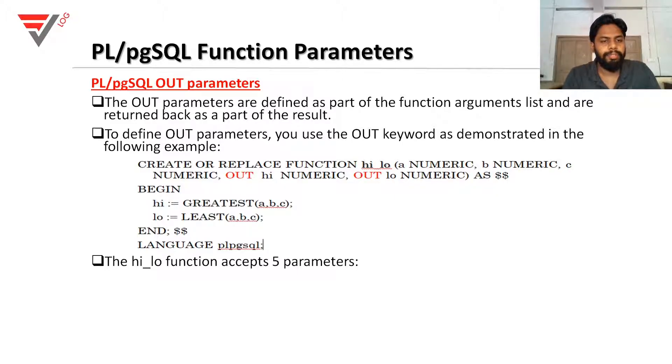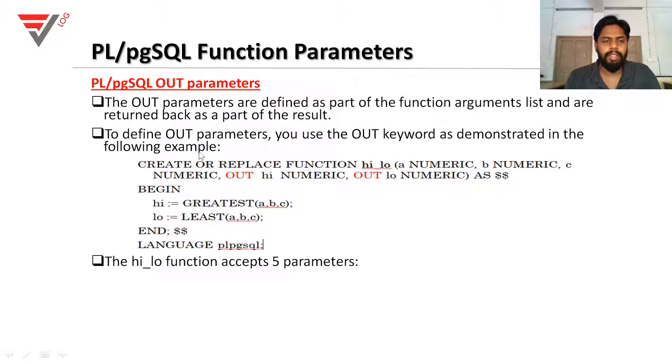To define an OUT parameter, you use the OUT keyword as demonstrated in the following example.